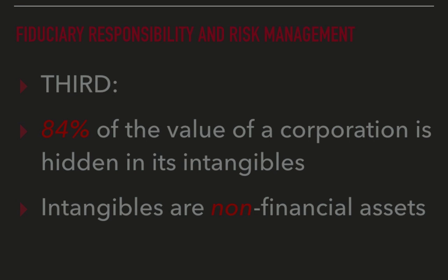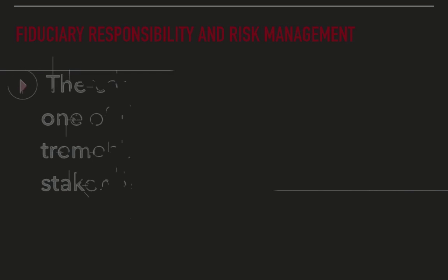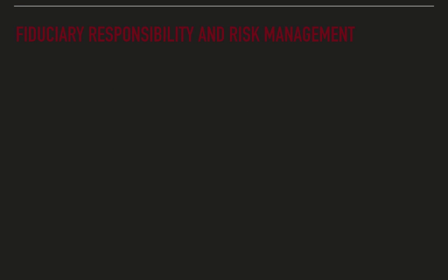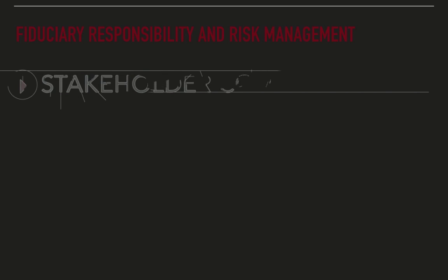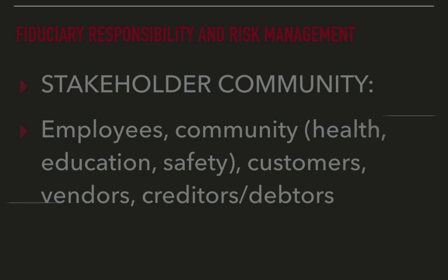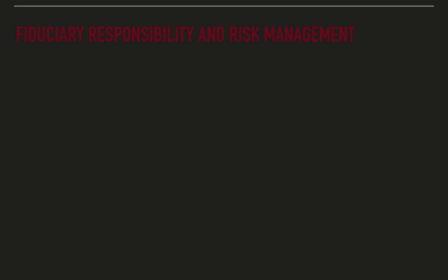Consider that the electricity Google uses to power all their servers consumes more electricity than the country of Sweden. The consequence of failure of one of these corporate entities can have tremendous consequences for the stakeholder community — the employees, whether owned or outsourced down the supply chain; the community, which through loss of taxation could lose its health, education, and safety programs; customers; and there can be bankruptcies of vendors and suppliers, losses by creditors and debtors, and others.